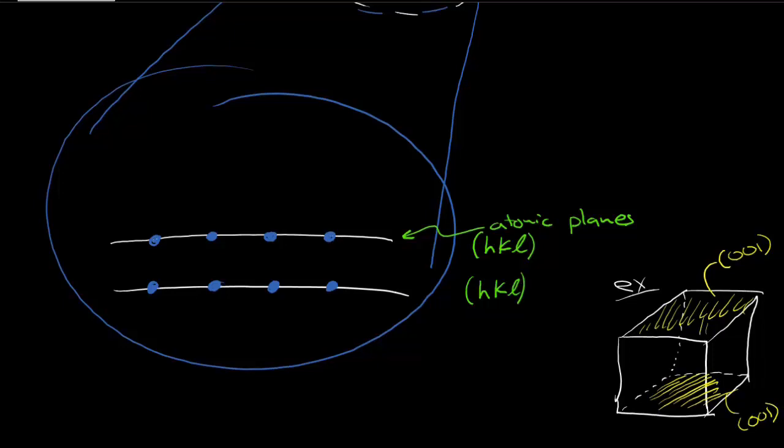So don't really get too hung up over where these atoms are in space. I'm just drawing a cartoon depiction of the atoms. And then some radiation comes in and hits the sample. And some of the radiation, though, bypasses that first layer and hits the second plane down.